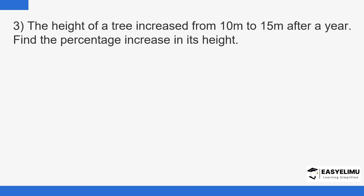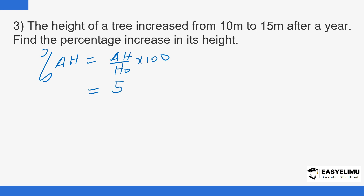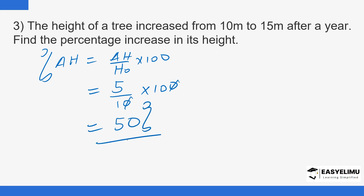The height of a tree increased from 10 metres to 15 metres. Find the percentage increase. Using the formula: percentage change in height equals change in height over original height times 100. The change is 5, the original height is 10, so 5 over 10 times 100 equals 50%.